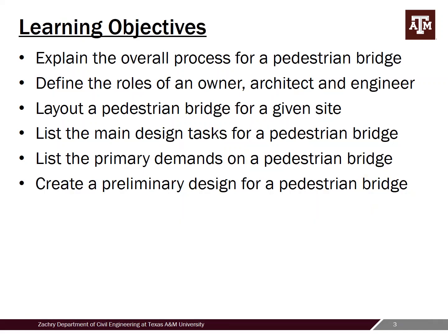One of the main learning objectives for this three-part series is going to be more high-level and big picture. First, you should come out of it with the ability to explain the overall process to go from just a blank canvas project site all the way through to an operating facility. You should be able to define the general roles of an owner, architect, and engineer, along with being able to lay out a pedestrian bridge for a given site and understand the driving factors for doing that task. You should also be able to list the main design tasks for a pedestrian bridge as well as list the primary demands or loading that we need to account for.